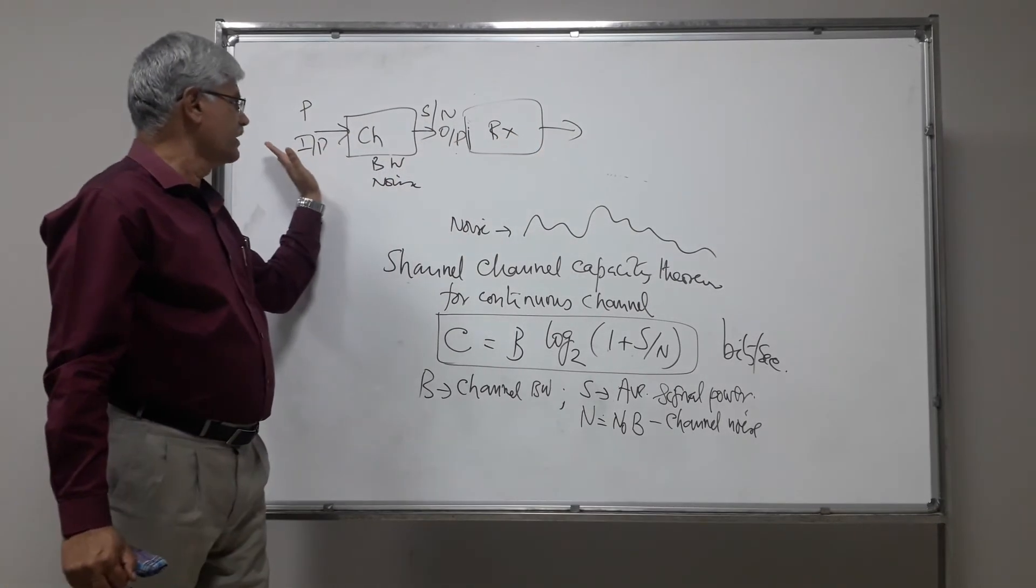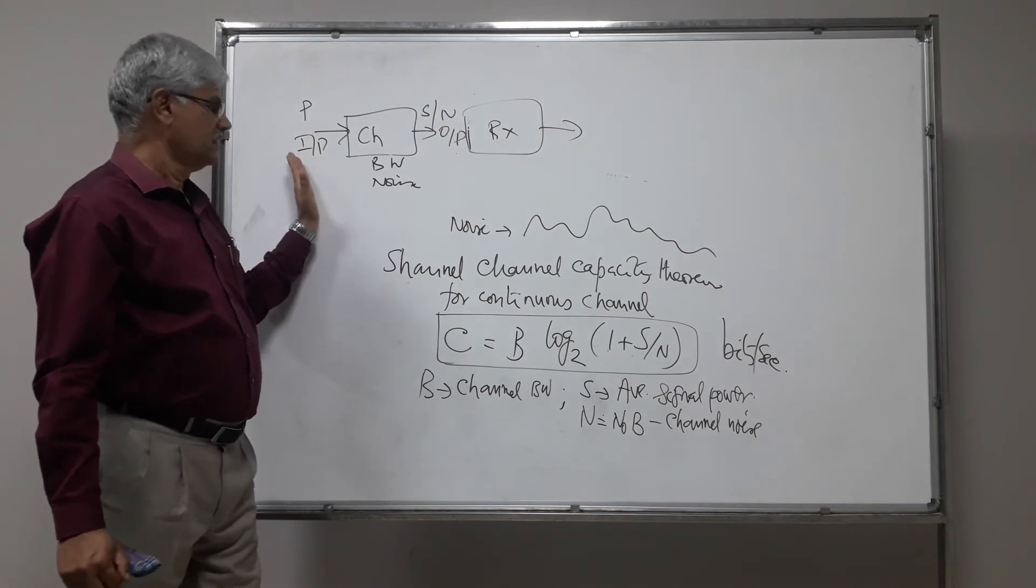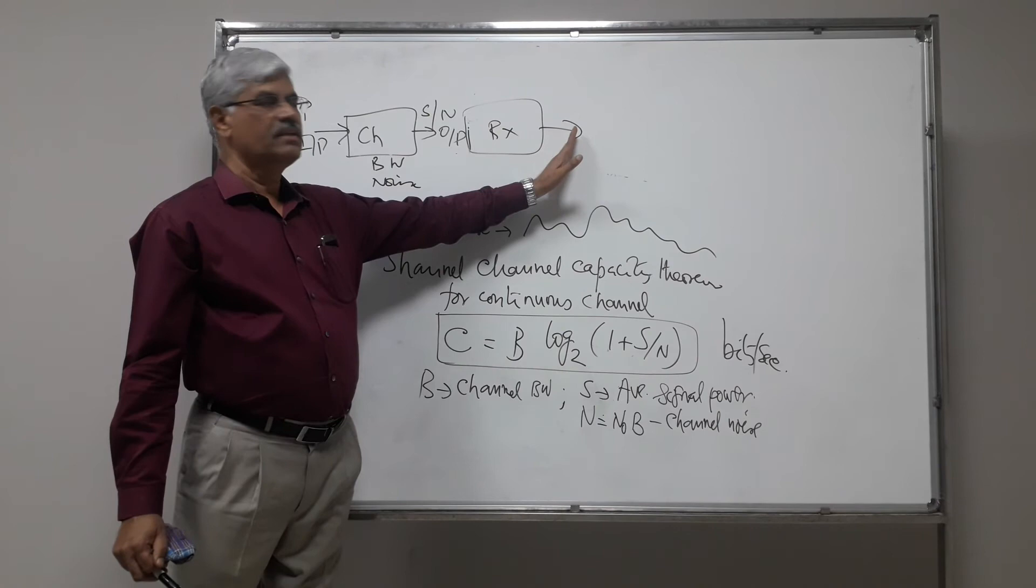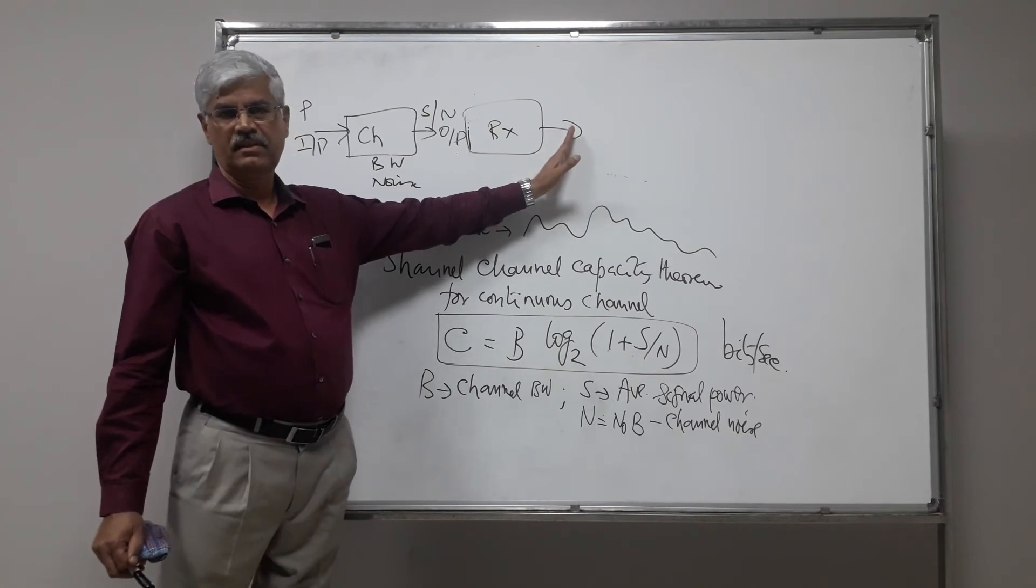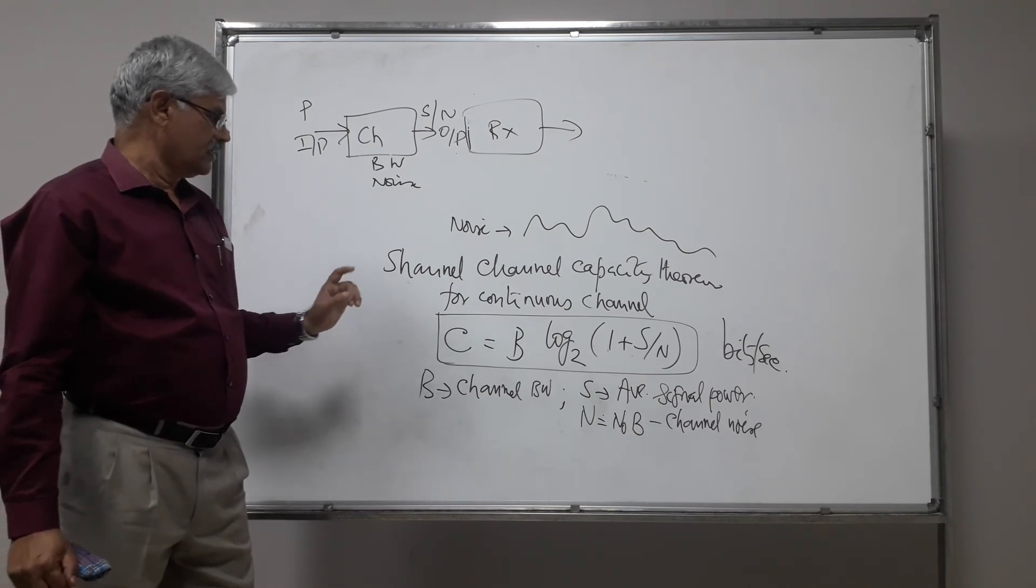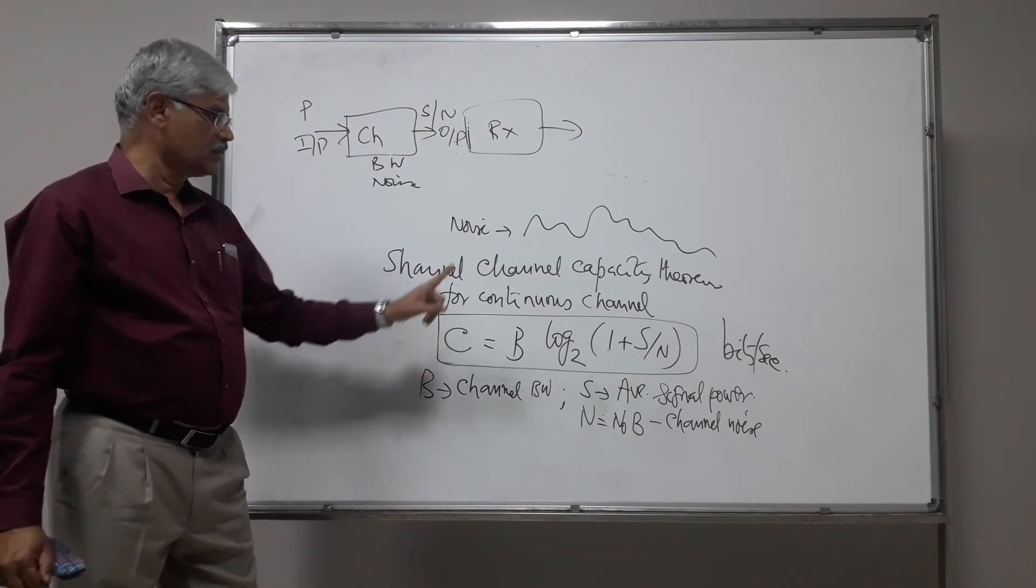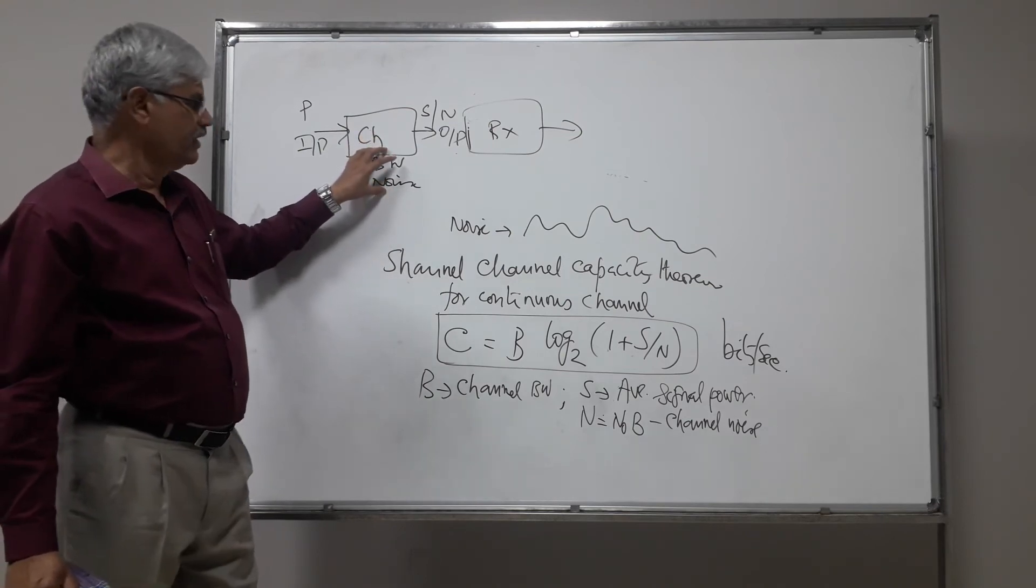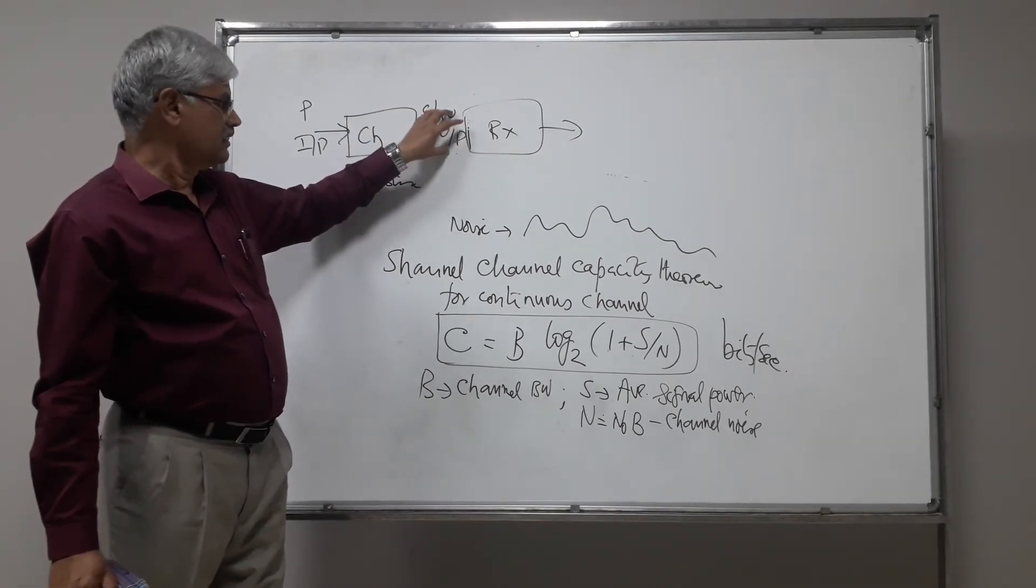Now, maximum rate that you can transmit from here is given by C, which will result in error-free reception. So for an error-free reception, maximum rate of transmission is so many bits per second if you have B as a bandwidth and S by N as the received S by N.